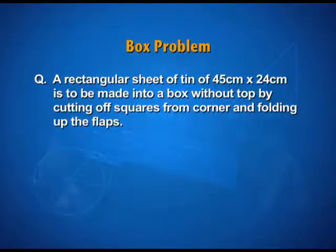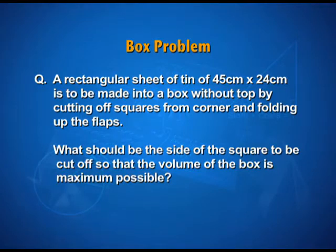The statement says: a rectangular sheet of tin 45 centimeter by 24 centimeter is to be made into a box without top by cutting off squares from corners and folding up the flaps. What should be the side of the square to be cut off so that the volume of the box is maximum possible?